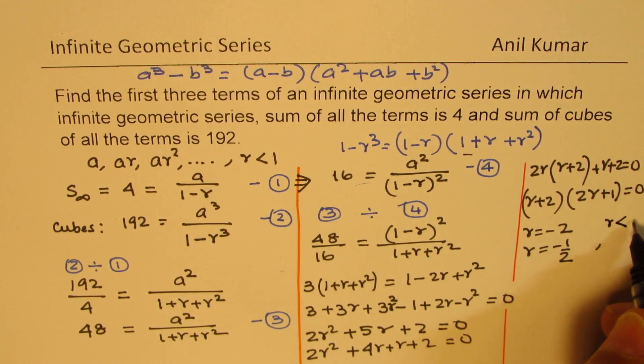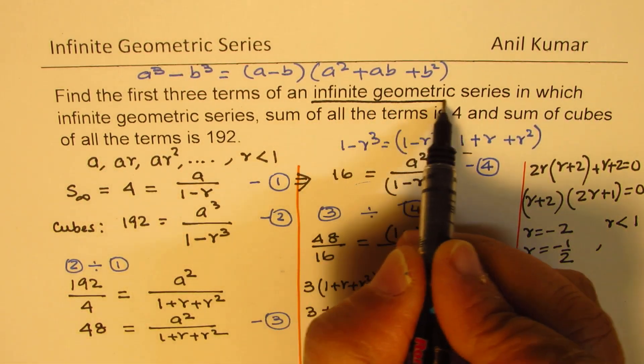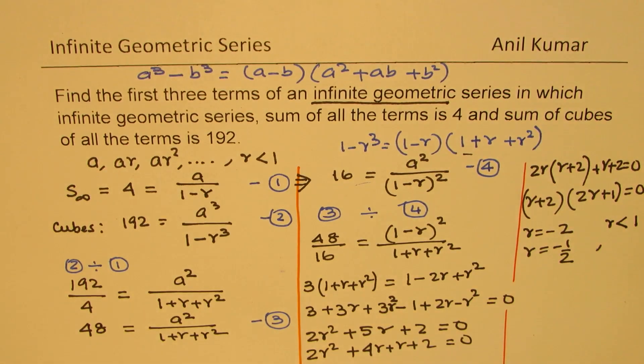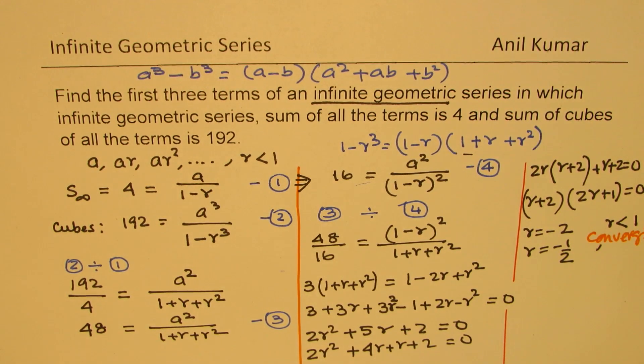Since R should be less than 1, since we are looking at infinite series, geometric series, we want convergence for converging series. Otherwise the sum is infinity. So we will take R as minus half.